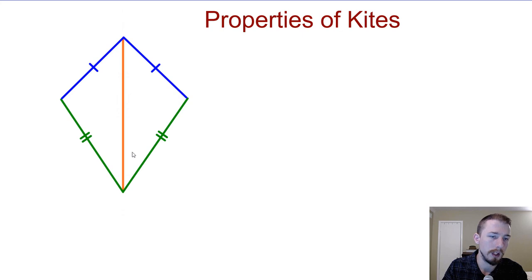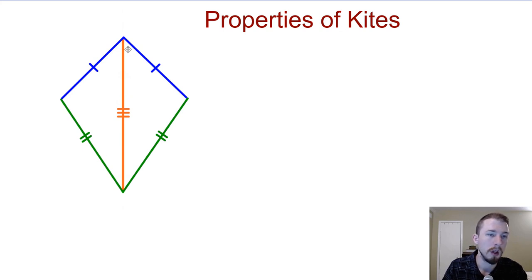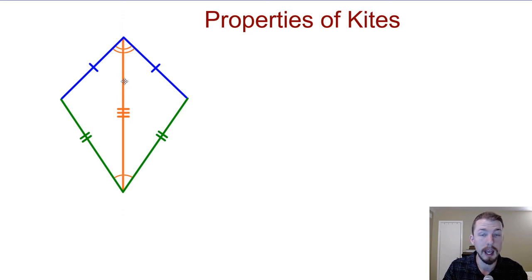If this is our line of symmetry, then we also have the reflexive property — the orange diagonal is going to be congruent to itself. The blue sides are the same, the orange side is the same, and the green one. So it splits the kite into two triangles that are going to be congruent. That means all the corresponding angles have to be congruent as well. So these angles up on the top are the same.